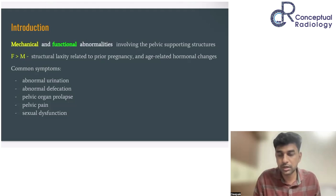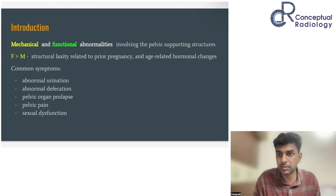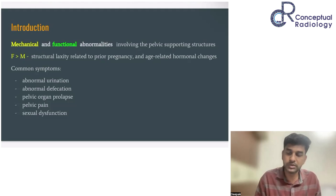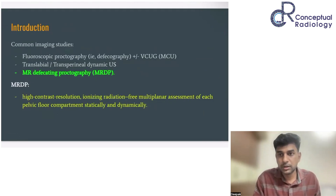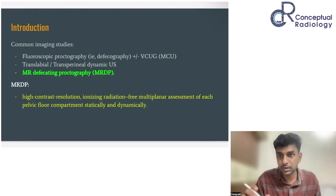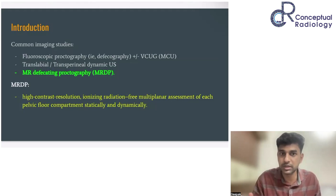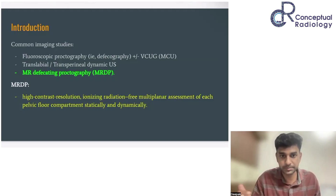Abnormal defecation can initially present as incomplete defecation, an incomplete sense of passing stool, followed by constipation. Next is a mass per vaginum or pelvic organ prolapse. There can also be pelvic pain and dyspareunia — pain during coitus. Most disorders are clinically suspected; however, imaging plays a very important role in diagnosing which compartment is involved, which structures are affected, where the main abnormality is, and associated features — all critical for surgical planning and post-surgical rehabilitation.